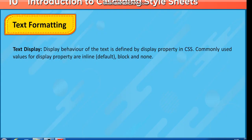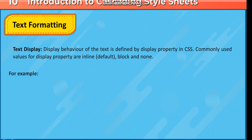Text display. The display behavior of text is defined by the display property in CSS. Commonly used values for the display property are inline (default), block, and none.